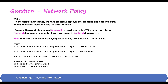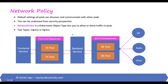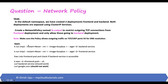Let's take a look at the question again. We have to create a network policy to restrict outgoing TCP connections from the frontend deployment and only allow them to the backend deployment. We will test this step by step: we'll set up the deployments and services, verify the frontend pod can hit the backend service and also reach google.com. After applying the network policy, the frontend pod should still connect to the backend service, but should not be able to connect to google.com.